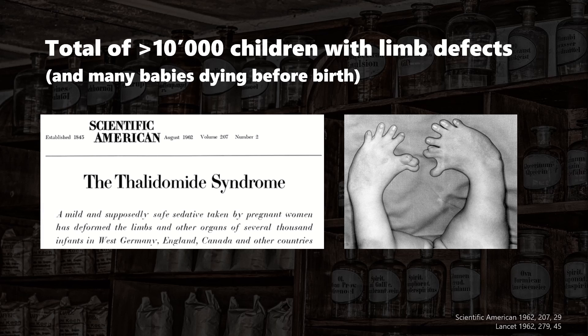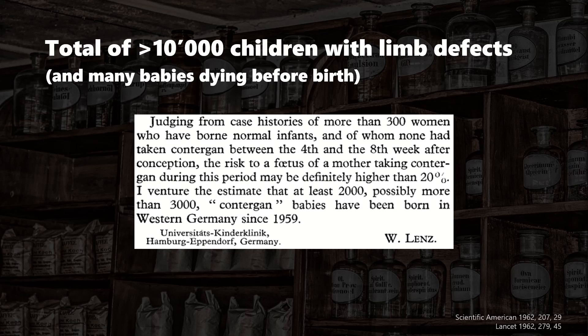Only later did we find out that deformations were actually just the tip of the iceberg. Thalidomide induced many more miscarriages and less obvious defects like organ problems. After increasing noise on the issue, the German government pulled the drug off the market against the company's wishes. The adverse impact of early use is so high that even a single tablet was enough to induce pregnancy loss or abnormalities.